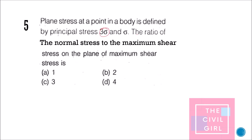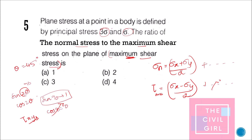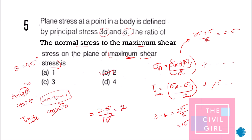Question 5: At a point in a body defined by principal stresses 3 sigma and sigma, find the ratio of normal stress to maximum shear stress on the plane of maximum shear stress. On the plane of maximum shear stress, the normal stress equals (sigma x + sigma y) / 2 and the shear stress equals tau max. Substituting sigma x = 3 sigma and sigma y = sigma gives normal stress = 2 sigma and tau max = sigma. The ratio is 2 sigma / sigma = 2 — option B.